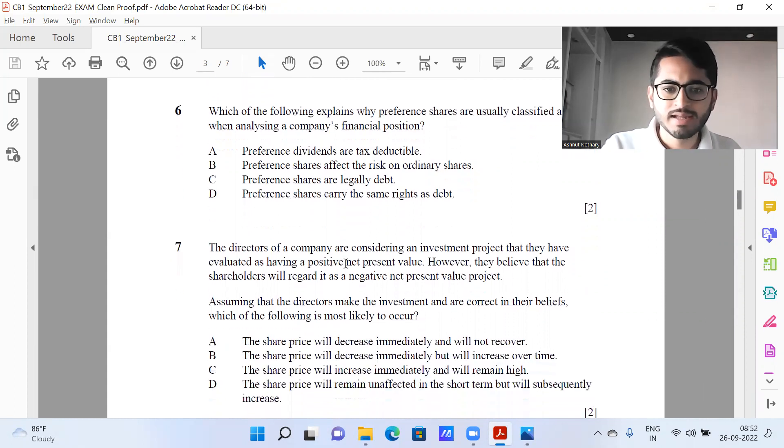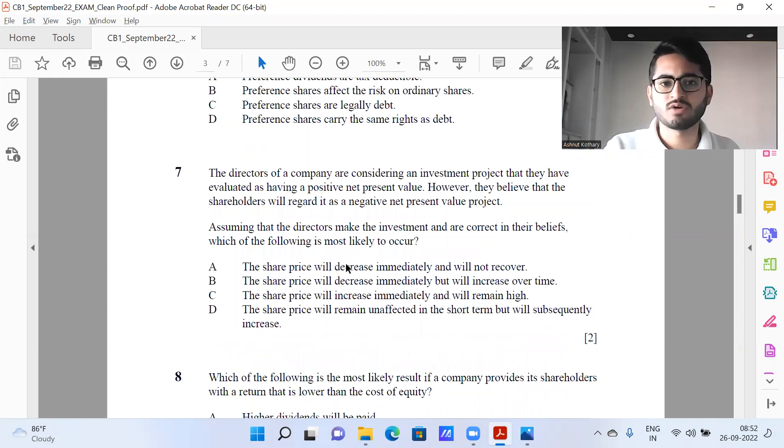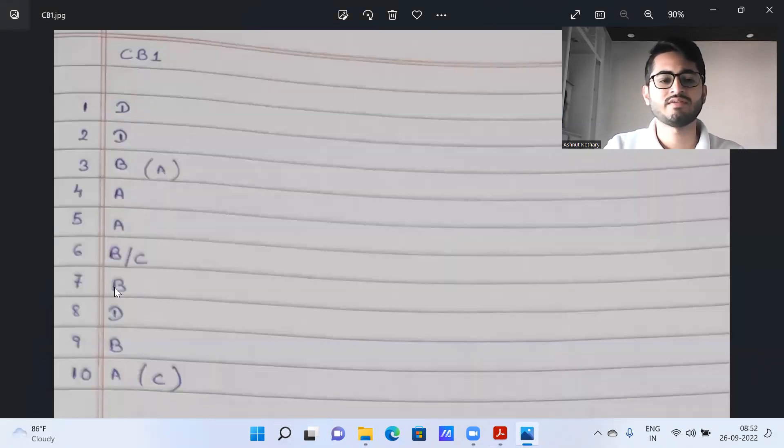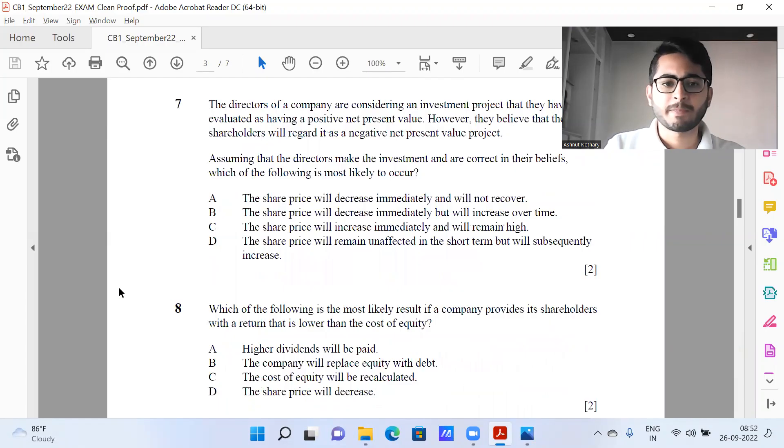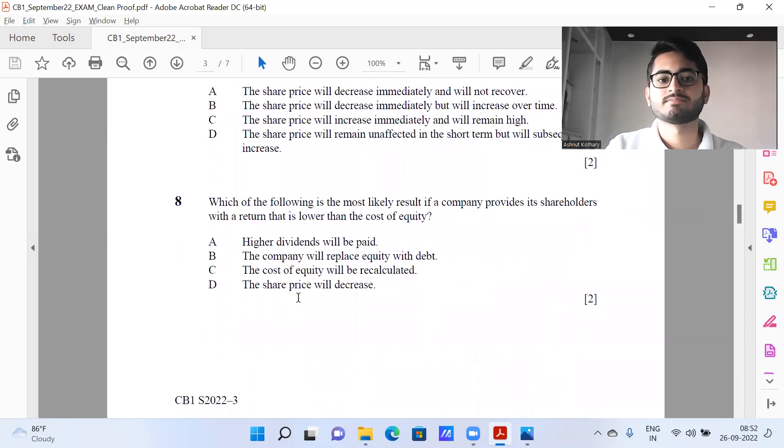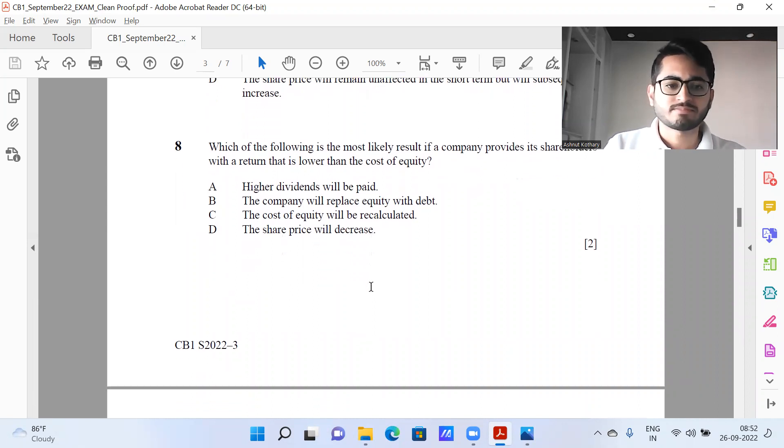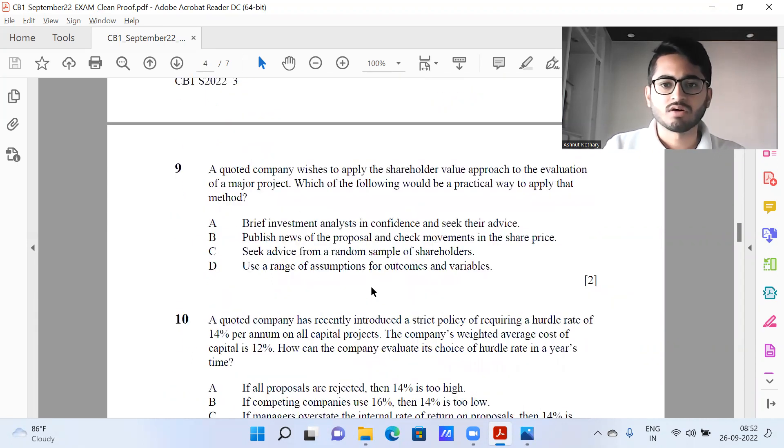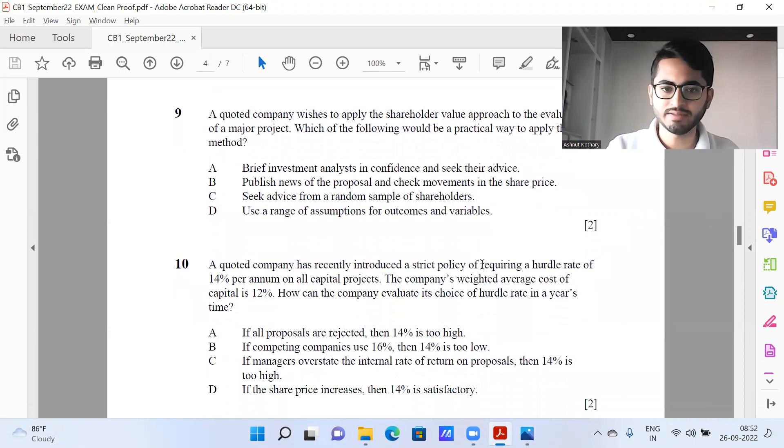So next question number seven, shareholder value approach is there. This is fairly straightforward - question seven, it's C. Then question number eight, it's D. Question number nine, I will say published news of the proposal and check movements in the share price - option B.